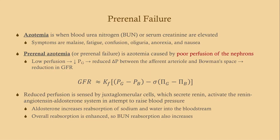Pre-renal failure is azotemia caused by poor perfusion of the nephrons. The nephrons are not going to die, but because they're not properly perfused — not enough blood getting to them — they're not going to be able to filter the blood properly.